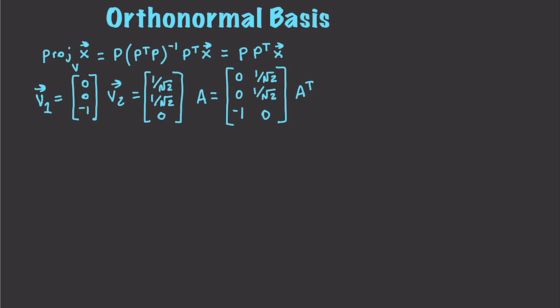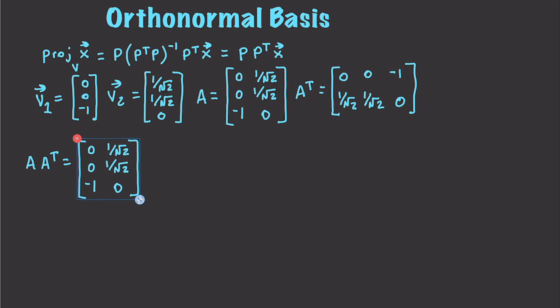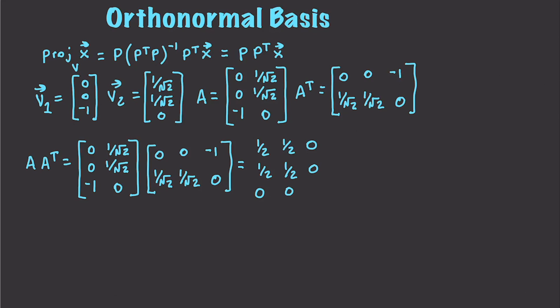A transpose is going to equal [(0, 1/√2, 0), (0, 1/√2, −1, 0)]. So we'll use this to project onto the subspace defined by vectors 1 and 2. Computing A A^T, we multiply A times A^T, and this ends up being equal to the matrix: (1/2, 1/2, 0; 1/2, 1/2, 0; 0, 0, 1). And now we're going to be able to use this to take any vector and project it onto our new subspace.